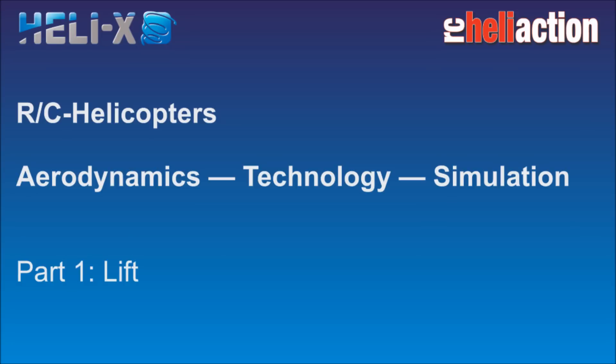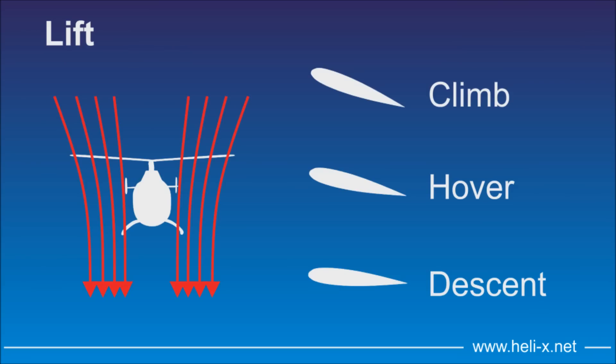In this first video, we consider the lift of the main rotor. When the helicopter hovers at a sufficient height, the lift is created by accelerating the surrounding air — the so-called downwash. An increase of the angle of attack of the blades increases the lift created by the main rotor. That means a large angle of the blades causes a climb, while smaller or even negative angles let the helicopter come down. With a particular angle of attack, the helicopter hovers at a constant height.